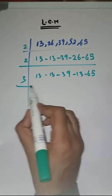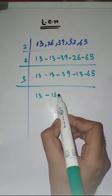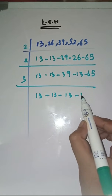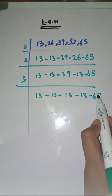Now with 3. 13 as it is. 13 as it is. 3, 1s are 3. 3, 3s are 9. 13 as it is. 65 as it is.